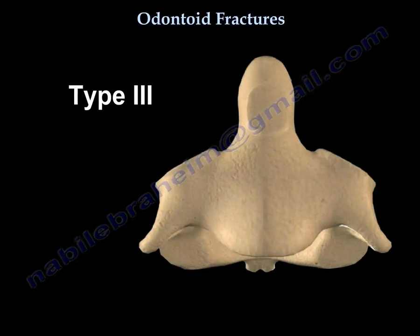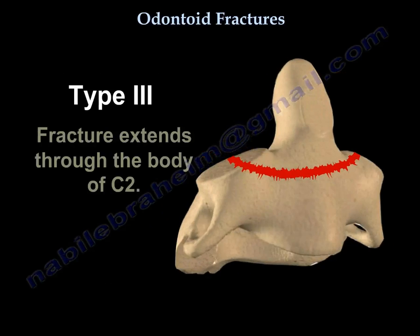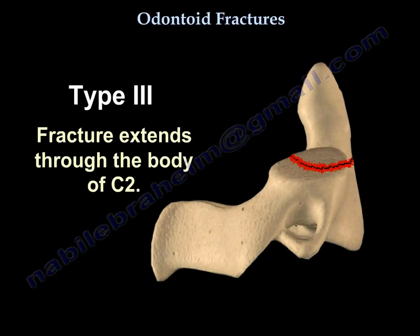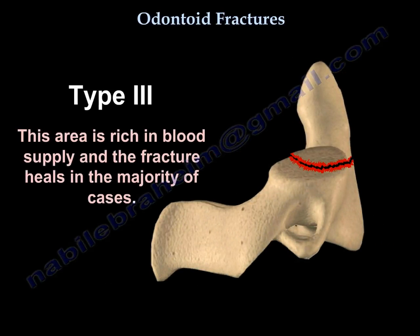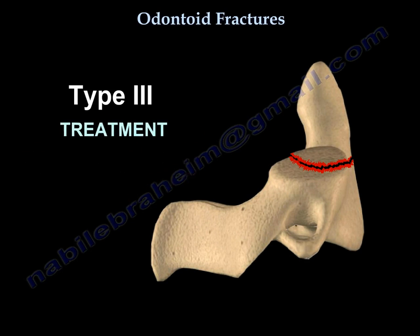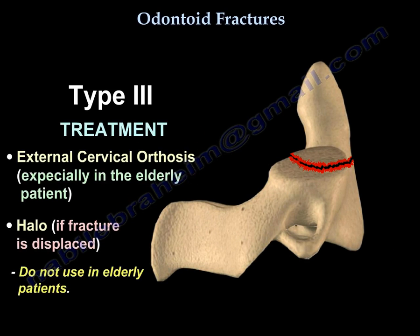Type 3 fracture is through the body of C2. It is rich in blood supply and heals in the majority of cases. Treatment is usually an external cervical orthosis, especially in the elderly patient. Use a halo if the fracture is displaced, but do not use a halo in the elderly patient.